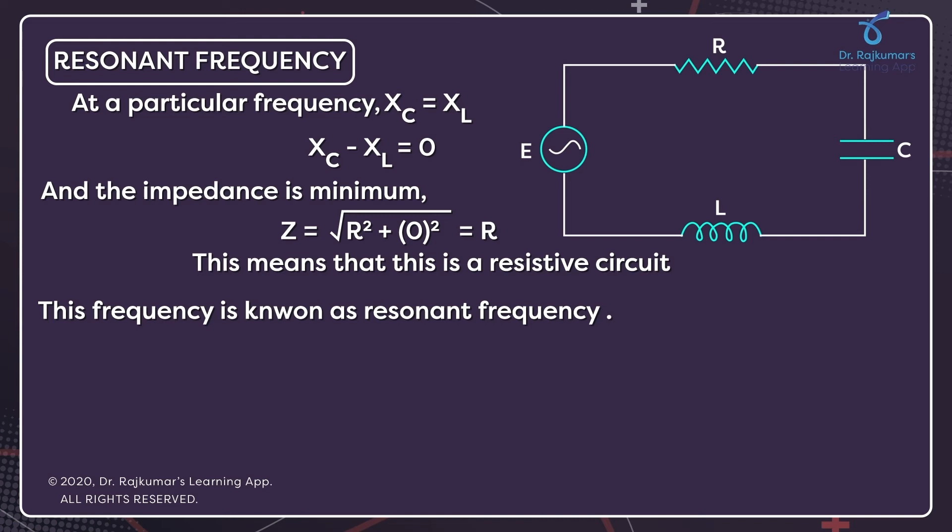Now how will you obtain the resonant frequency? Since XC is equal to XL, what is XC? 1 by ω₀ into C, which is equal to ω₀ into L. ω₀ is nothing but my resonant frequency. Therefore, I would rewrite ω₀ to be equal to 1 by the square root of L into C. So ω₀ is that frequency for which I will be obtaining the maximum amplitude of the current flowing in the LCR circuit.